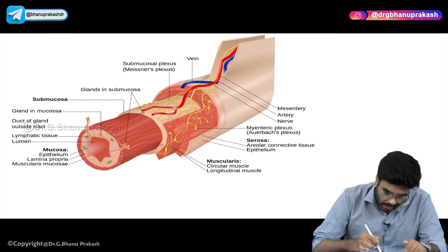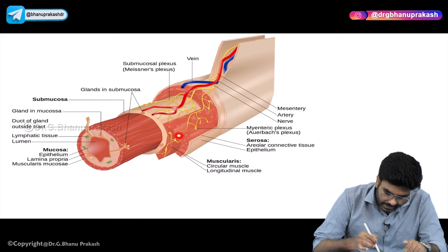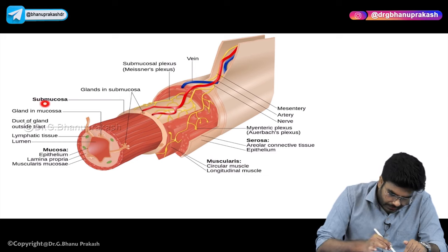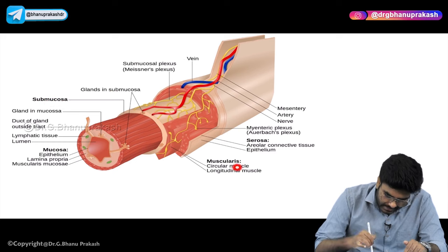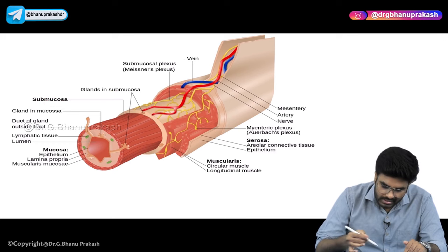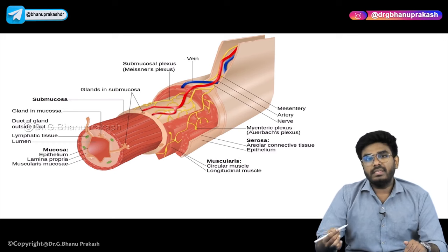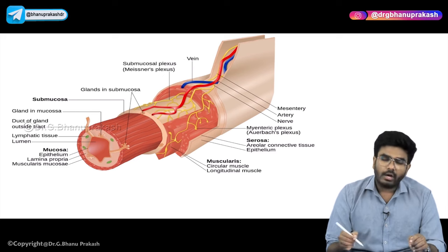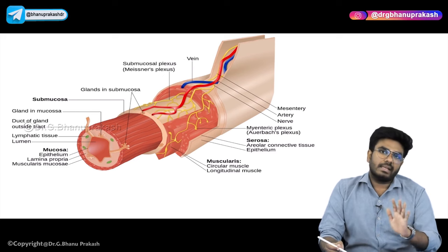After submucosa, you can appreciate this muscular layer. This muscular layer is called muscularis. So the innermost layer is mucosa, after that there is submucosa, and then muscularis layer. The last layer is the covering - it is serosa. Serosa is a connective tissue which is the outermost layer covering all the mucosa, submucosa, and muscularis.